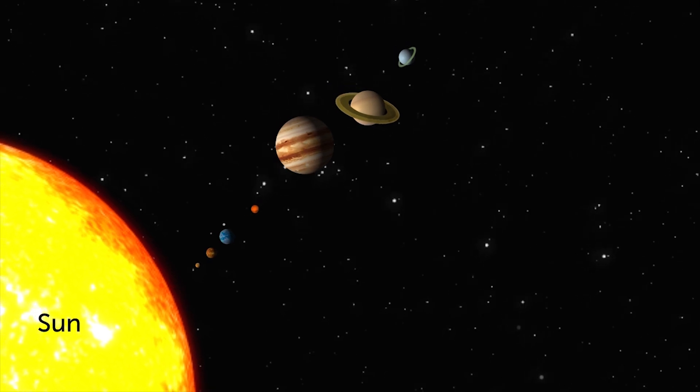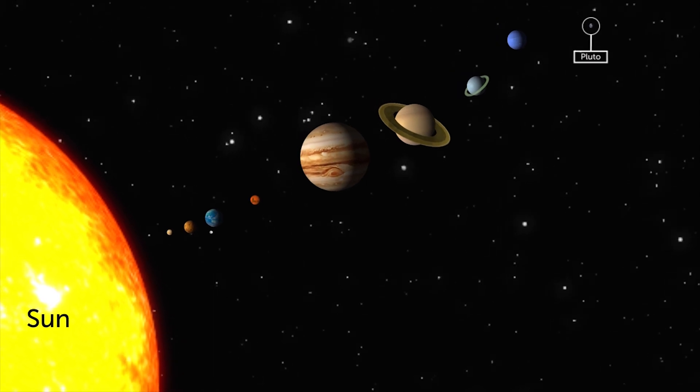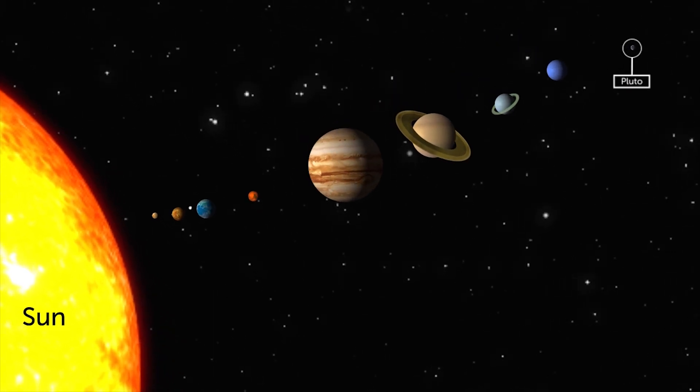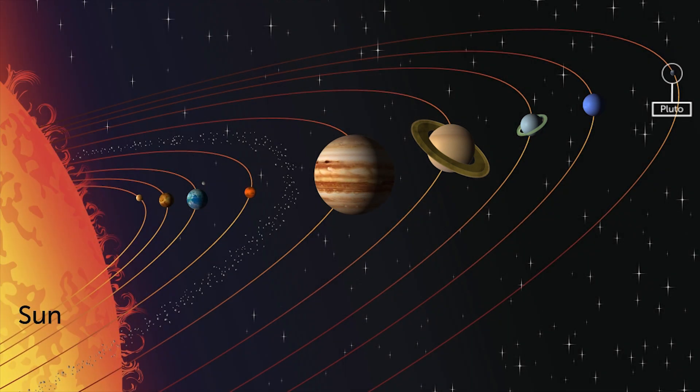There are eight planets and one other large body, Pluto. This was once thought of as a planet but in 2006 it was found to be too small and it was reclassified as a dwarf planet.